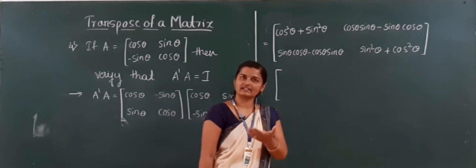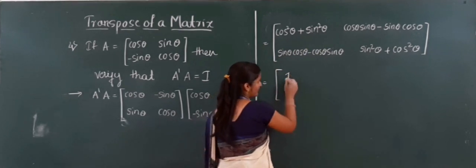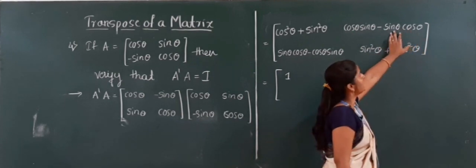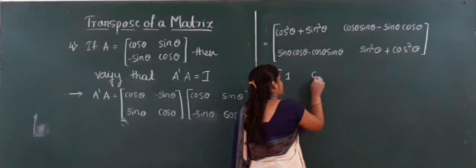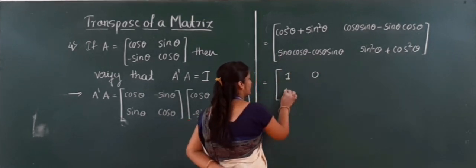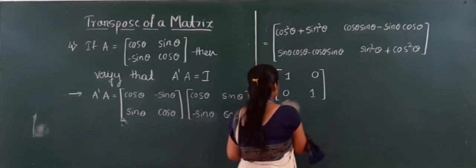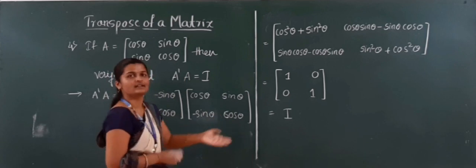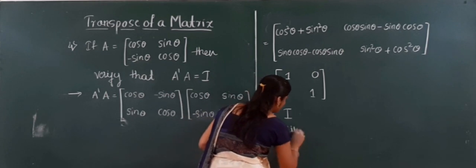Using the trigonometric identity — sine squared theta plus cos squared theta equals 1 — the diagonal elements become 1. The off-diagonal terms: cos theta times sine theta minus sine theta times cos theta cancel to give 0. So the result is the 2 by 2 identity matrix. Hence A dash into A equals I. Verified.